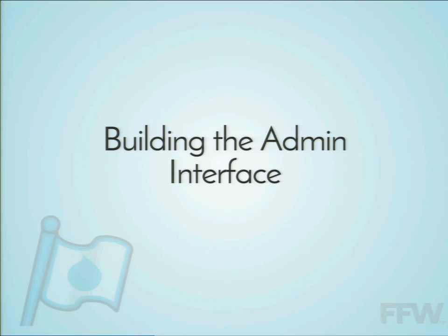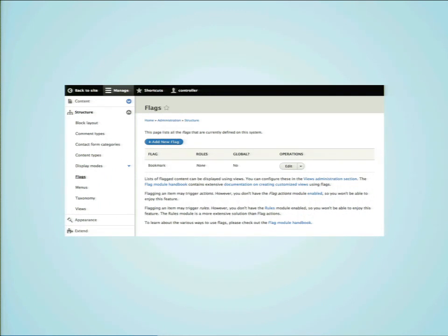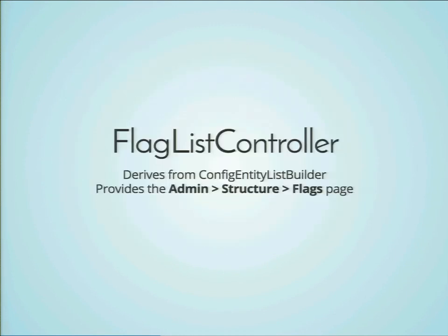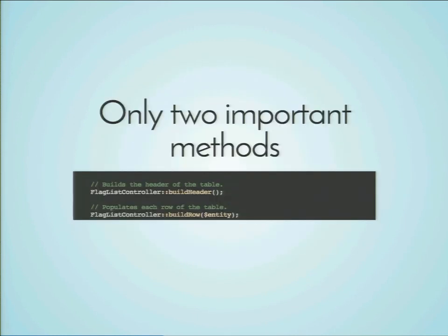So we have plugged our entity into Drupal. Now let's build the administrative interface. This is the list-all-entities page for flag — it's very rudimentary, just a series of rows, one Add Flag button, some operations, and some extra text at the bottom. We made this by creating a class called FlagListController, which derives from a Drupal-provided class called ConfigEntityListBuilder and provides the admin structure flags page. It only has two important methods: buildHeader and buildRow. BuildHeader defines the columns in the list table, and each row populates the content. We don't even have to load the entity — Drupal gives that to us for free.